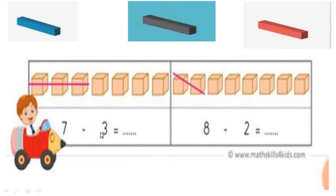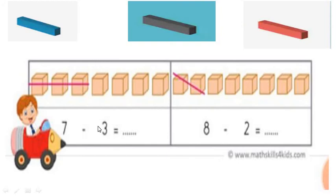The sum is 7 minus 3. I have 7 objects. Out of that, I have to cut 3 objects: 1, 2, and 3. How many objects are remaining? 1, 2, 3, 4. So 7 minus 3, the difference is 4.